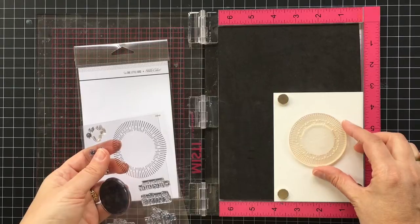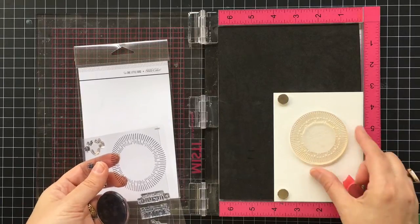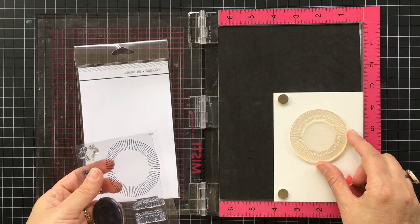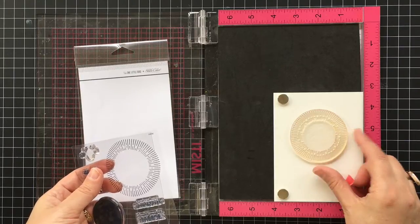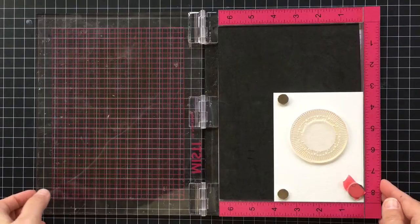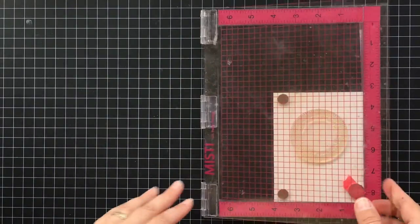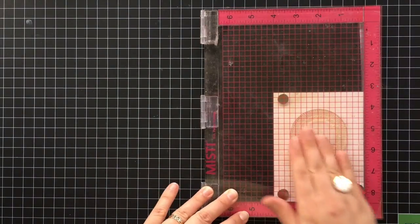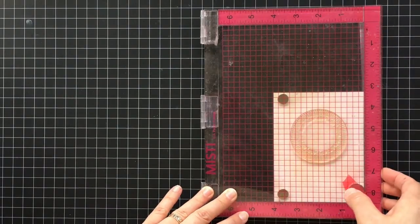What I really like about this tool is it lets you position your stamp exactly where you want it. So here I am getting the sun rays kind of in the middle, then you just close the lid and give it a little press and the stamp will stick to the lid just like that.